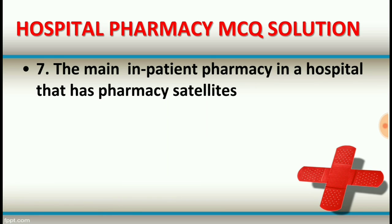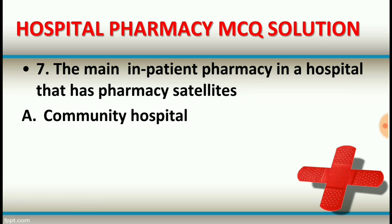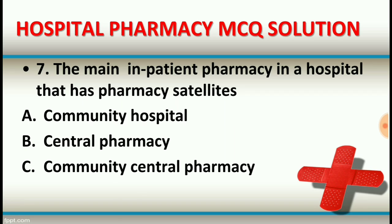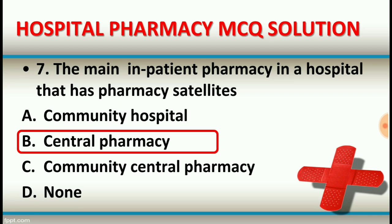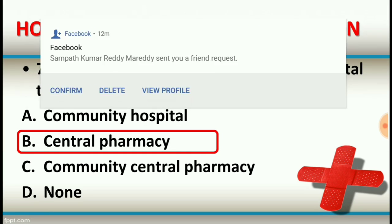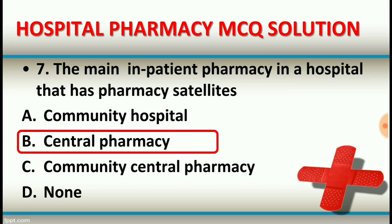Question number seven: The main inpatient pharmacy in a hospital that has pharmacy satellites. Option A: community hospital. Option B: central pharmacy. Option C: community central pharmacy. Option D: none of these. The right answer is option B, central pharmacy — the main inpatient pharmacy in a hospital that has pharmacy satellites.